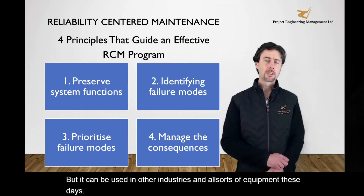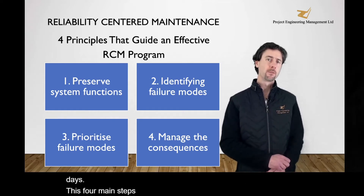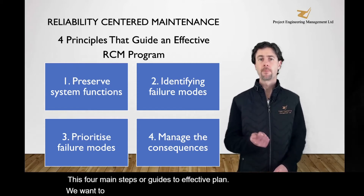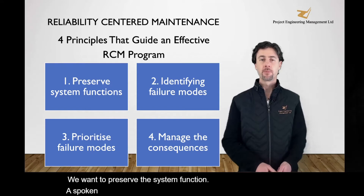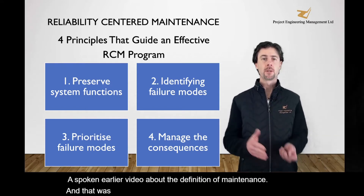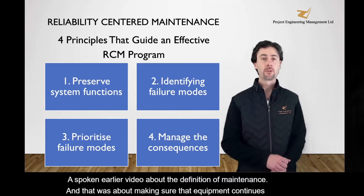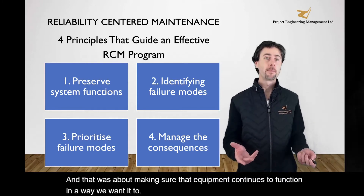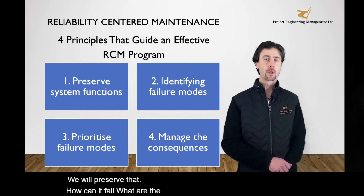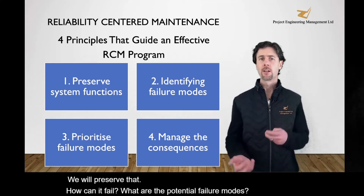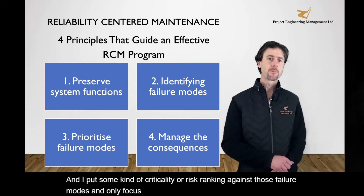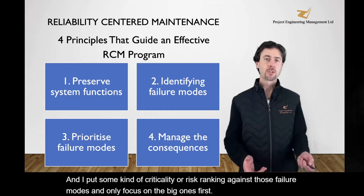There are four main steps or guides to effective planning. We spoke in an earlier video about the definition of maintenance — making sure that equipment continues to function in the way we want it to; we want to preserve that. How can it fail? What are the potential failure modes? We assign some kind of criticality or risk ranking against those failure modes and only focus on the big ones first, then manage the consequences.